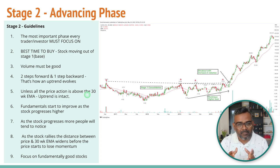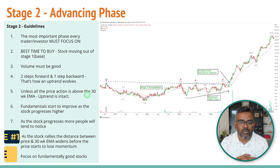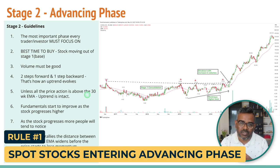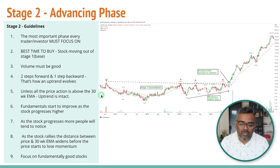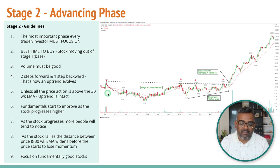The first important rule: you need to be able to spot stocks entering stage two of the trend, or entering an advancing or markup phase. This is the best time to buy, because the stock has completed the stage one formation where it went sideways for many months or years with the 30-week moving average almost flat. In a stage two stock, the 30-week moving average is slanting upward.